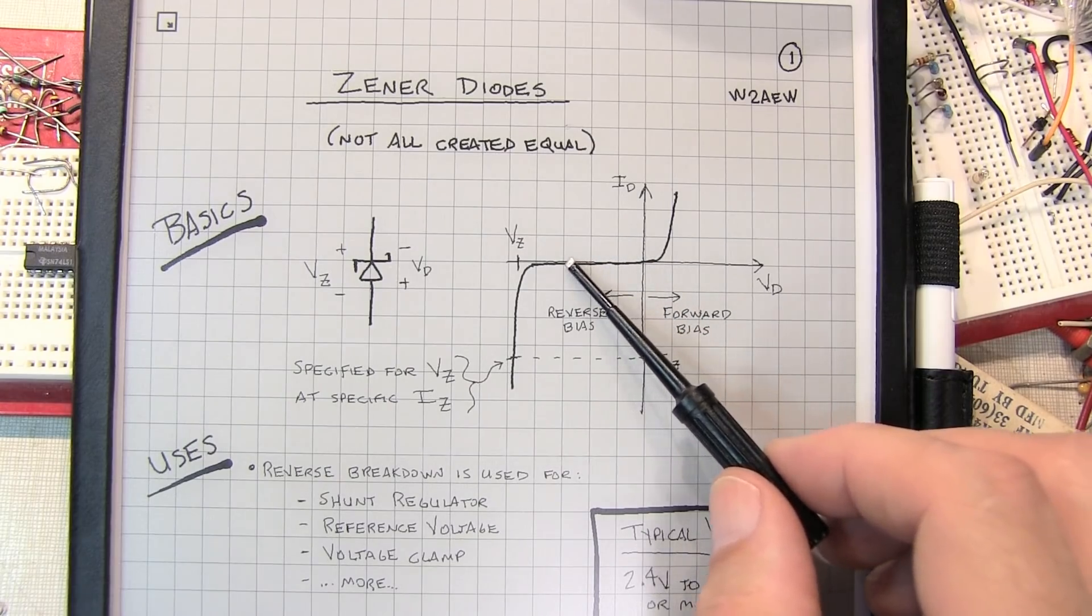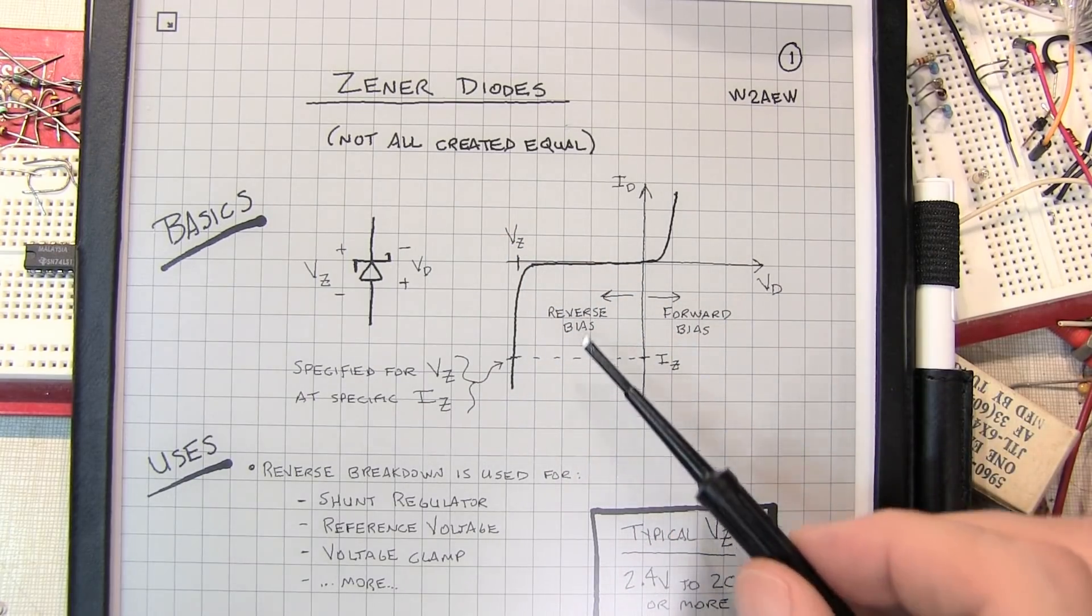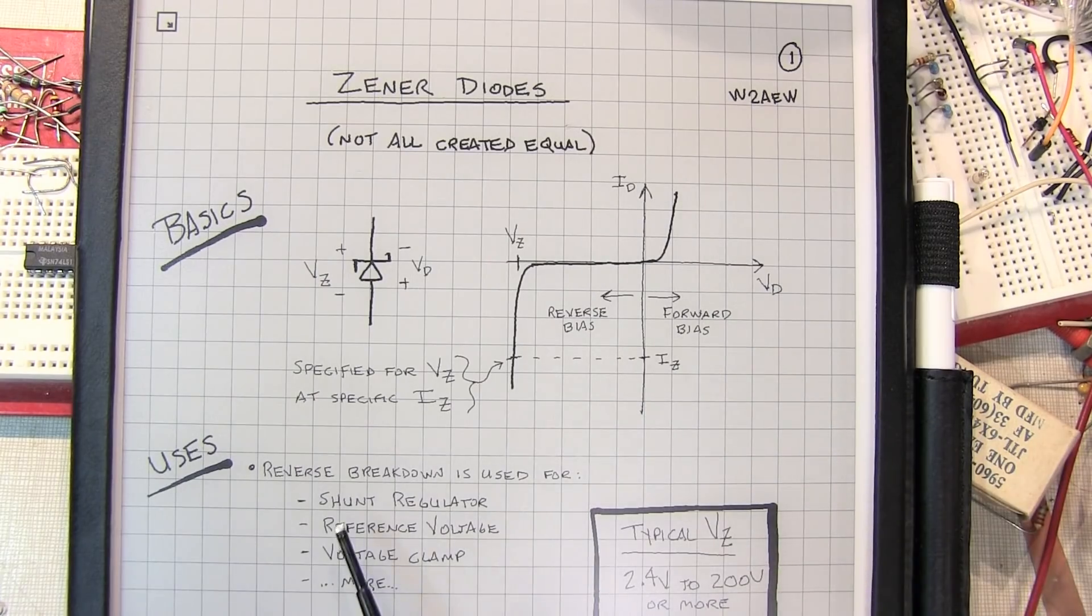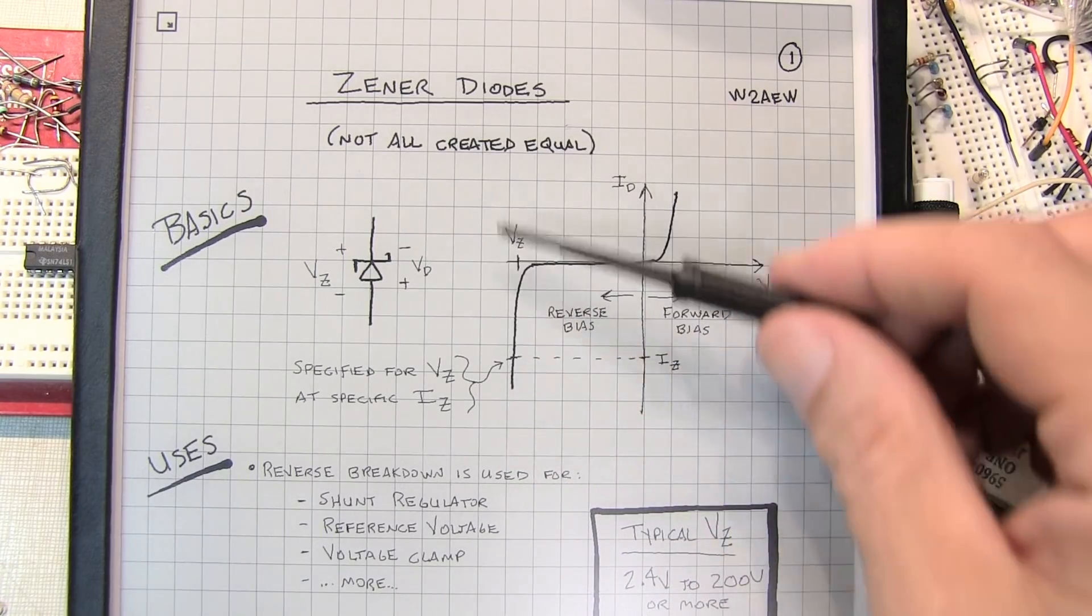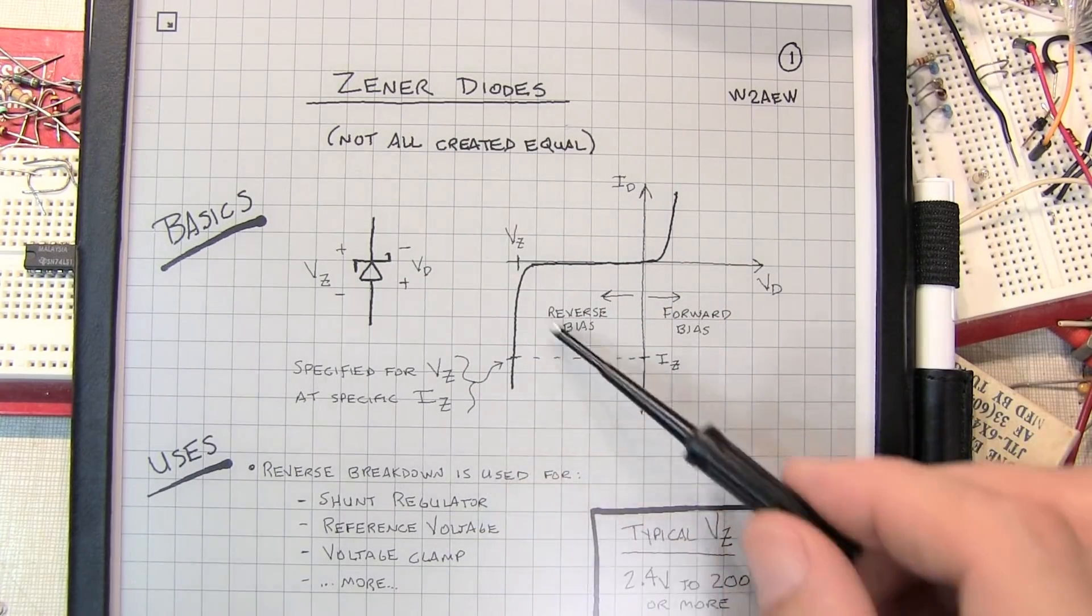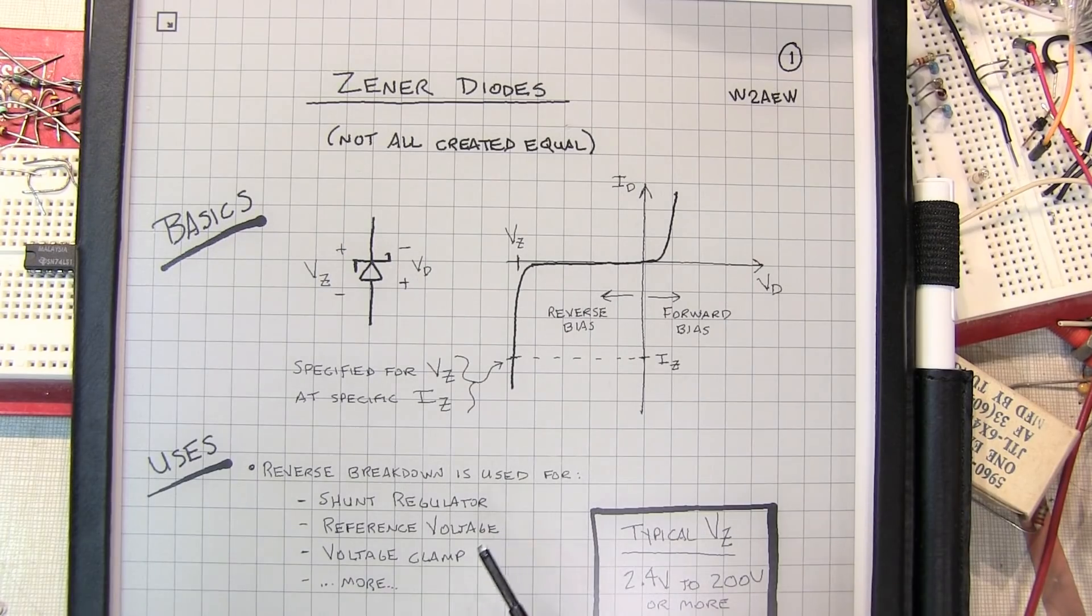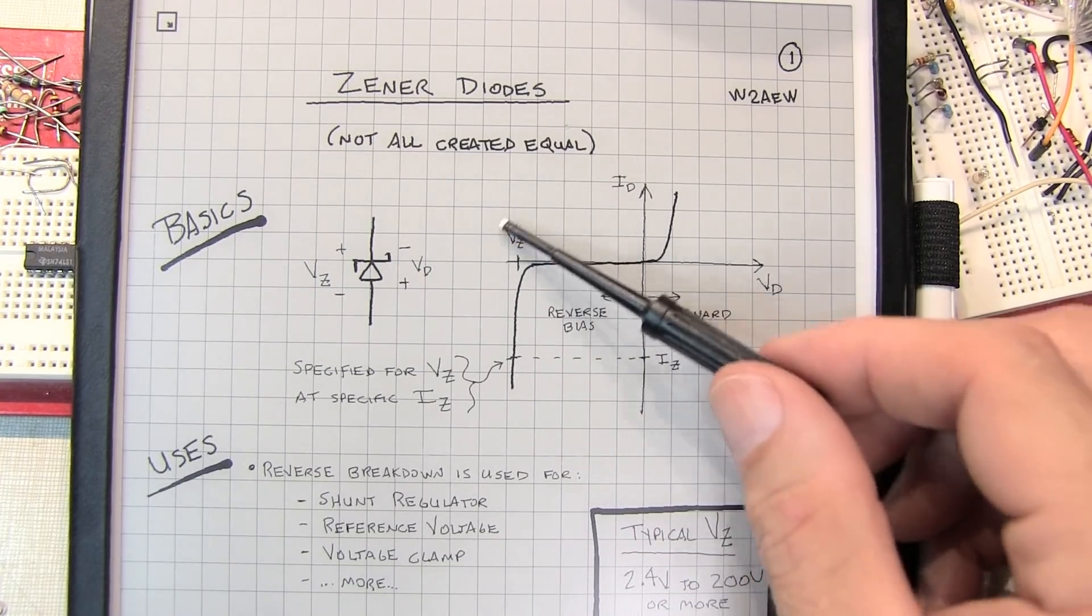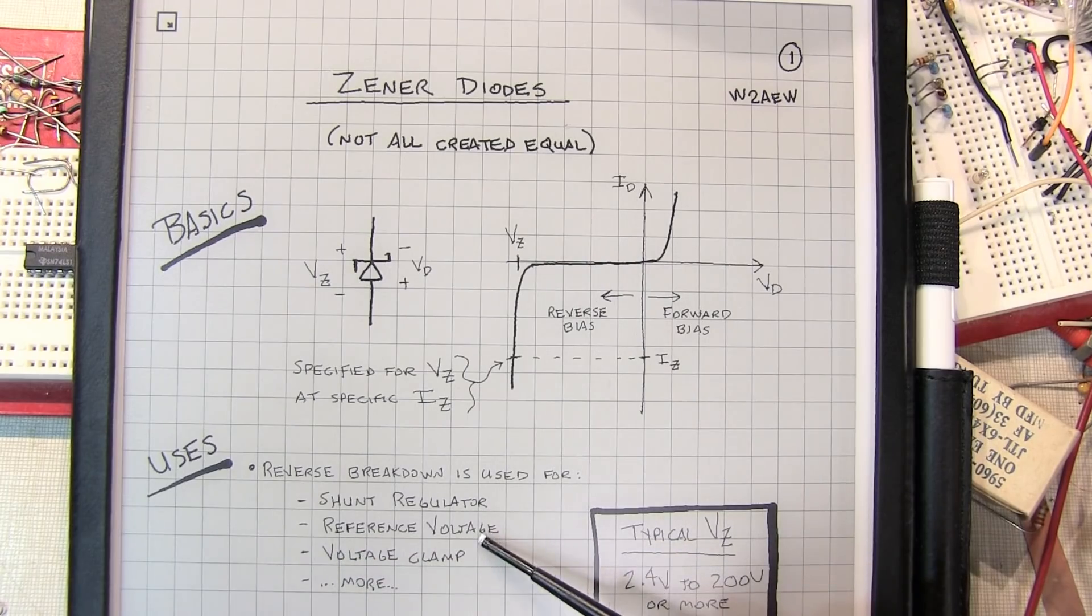Zener diodes are designed to break down in the reverse direction and start conducting at some pre-described Zener voltage. This can have some useful properties. It can be used as a shunt regulator, like a little voltage regulator. This is typically where you don't need good efficiency because you're going to burn some current flowing through that diode at all times. Also sometimes you might need a pre-described reference voltage, or a voltage that stays stable even if the power supply varies. Maybe a voltage clamp, or a level shifting circuit.